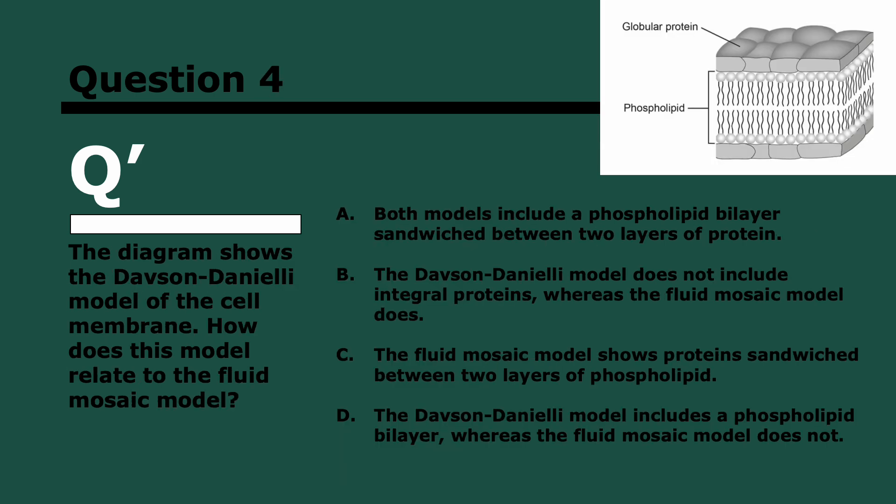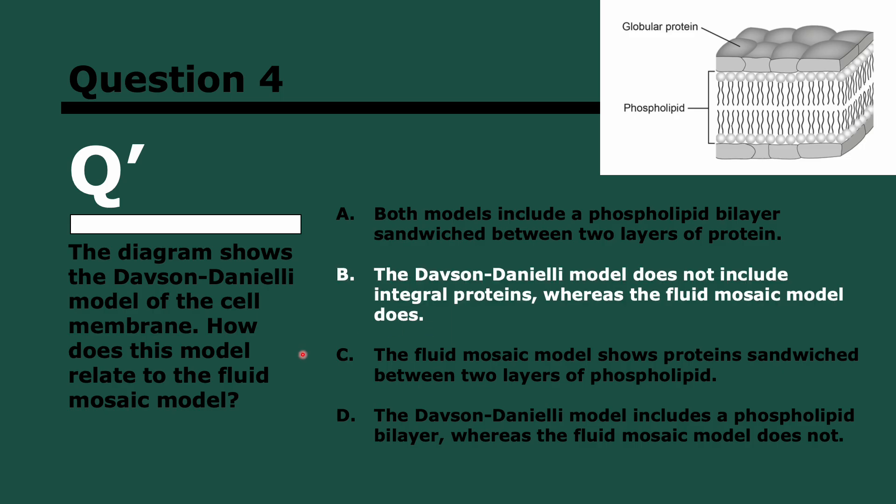Question four. The diagram shows the Davson-Danielli model of the cell membrane. How does this model relate to the fluid mosaic model? Three, two, and one. It's B. The fluid mosaic model is the current one with a phospholipid bilayer and the proteins, which can be integral or peripheral. It's B because the fluid mosaic model does include integral proteins. The Davson-Danielli only includes this sandwich of proteins and then phospholipids. Both don't include a phospholipid bilayer between two layers of protein, that's only Davson-Danielli. The Davson-Danielli model includes a phospholipid bilayer, but the fluid mosaic model also does.